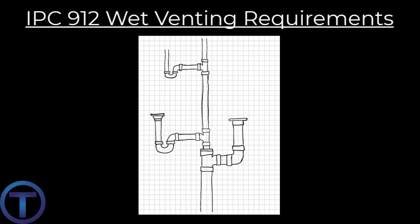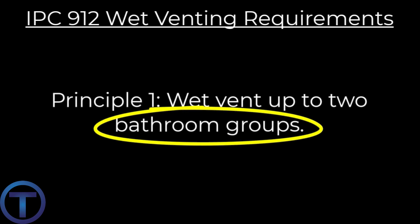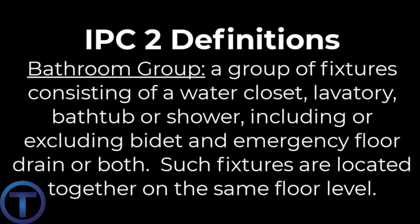Alright, let's examine the basic requirements for wet vents. Vertical wet vent principle one: a wet vent can serve up to two bathroom groups. Please note that a wet vent is limited to bathroom group fixtures. The definition for a bathroom group is given in the International Plumbing Code, chapter two.